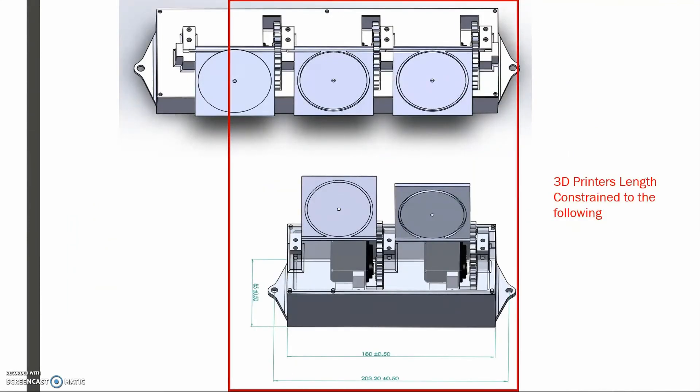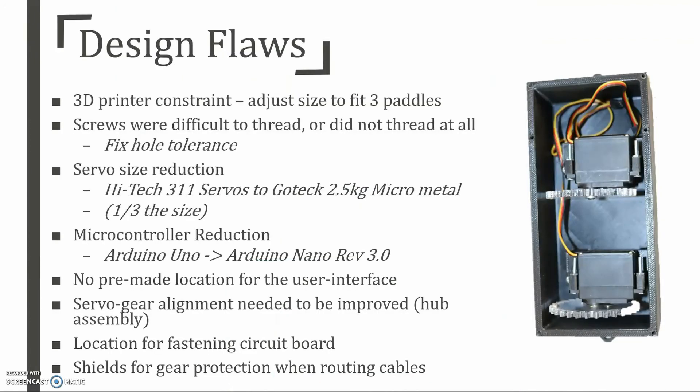Unfortunately, when it came time to printing the prototype, the build envelope for the 3D printers on campus were too small. With semester one deadlines approaching, I quickly reduced the design to a two-paddle prototype. This was not ideal for the first prototype, however it gave some insight for the final construction. Screws were found difficult to thread, so the tolerance for holes needed to be adjusted. The 3D printer constraint meant that the microcontroller and servos needed to be reduced in size. Hand drilling locations for the user interface and display would be too difficult, so pre-made locations should be incorporated into the body. A location for fastening the circuitry was not considered well enough, and routing cables for the servos caused issues with the gears.